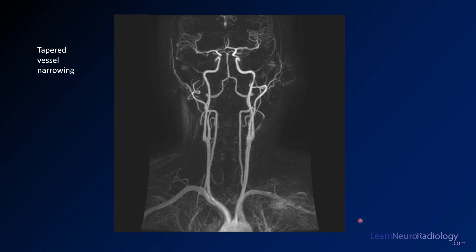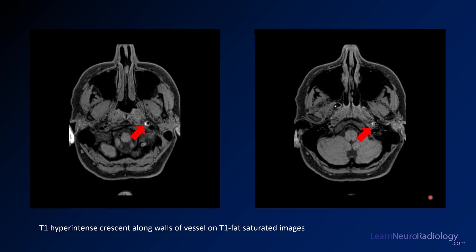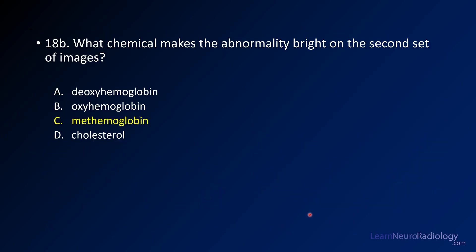On this MIP of the MRA of the neck, you're really not seeing a lot of abnormality — maybe a little bit of smooth tapering of the distal cervical ICA, but it's not very apparent, so it can be tricky. But when you do your fat-saturated imaging through the neck, all the fat is saturated and you see this crescent of T1 abnormality along the medial aspect of the left internal carotid. That's your dissection flap with the methemoglobin collecting there. Remember the importance of getting T1 fat-saturated images to look for that methemoglobin.